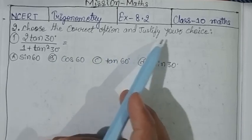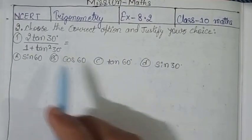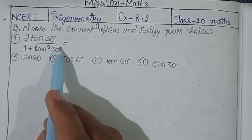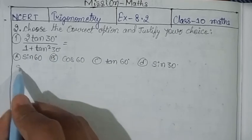The first part says choose the correct option and justify your choice. The problem is 2 tan 30° upon 1 plus tan square 30°, and we are asked what will it be. So now we will solve it.